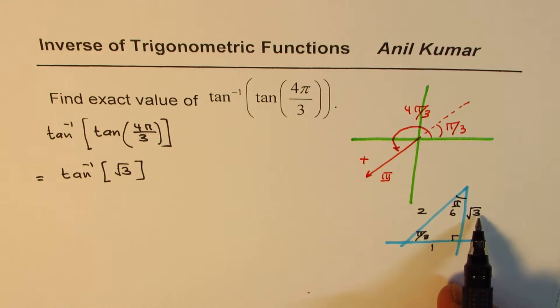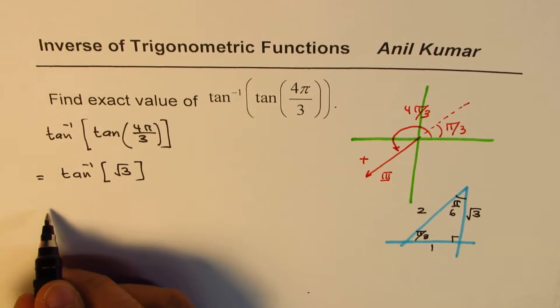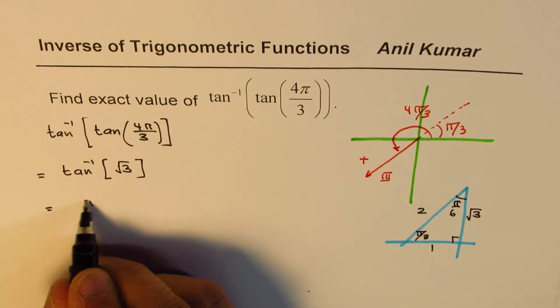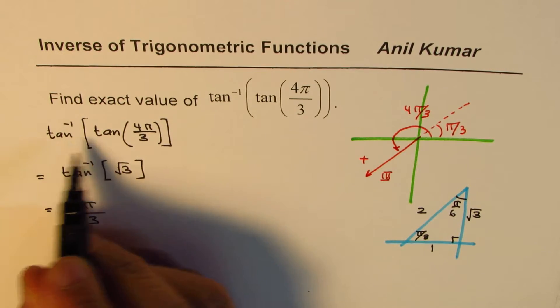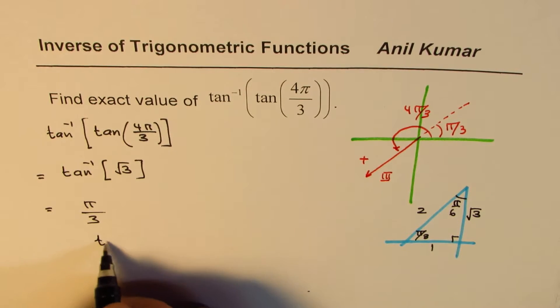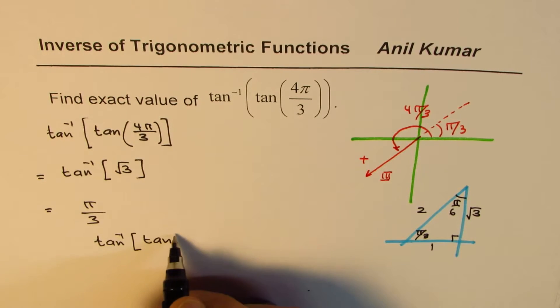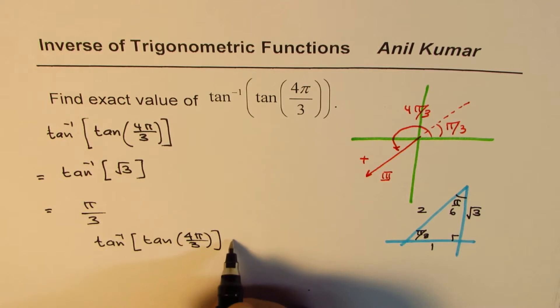Now tan inverse of square root 3 is π by 3, correct? We just got it. So that could be written as π by 3. So what you get here is that tan inverse of tan 4π by 3 is equals to π by 3.